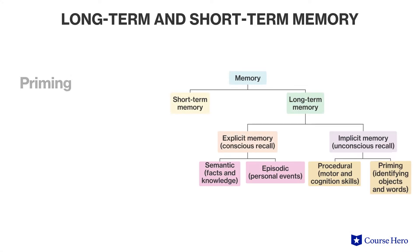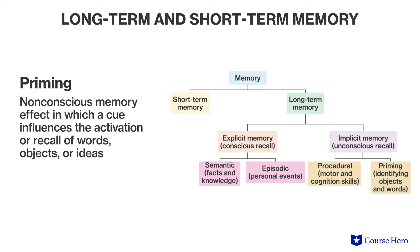Priming refers to the non-conscious memory effect in which exposure to a cue influences the activation or recall of words, objects, or ideas. For example, people exposed to the word 'yellow' and then asked to name a fruit are more likely to say 'banana' than 'orange' or 'apple.' This occurs because the word 'yellow' activates the memory of words and objects associated with that color.